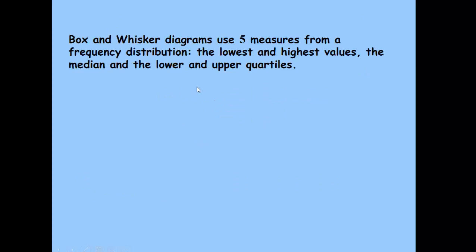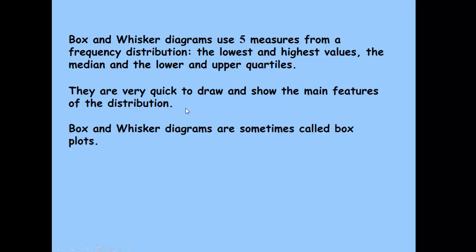Box and whisker diagrams follow on quite nicely from the cumulative frequency diagrams we were looking at in the last video. They use five measures: the lowest and highest values, the median, and the lower and upper quartiles. They are very quick to draw and really good for presenting data and comparing data in a quick and easy way to understand. We sometimes refer to them as box plots.